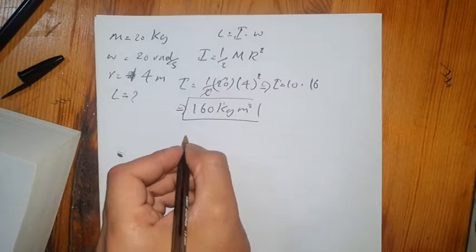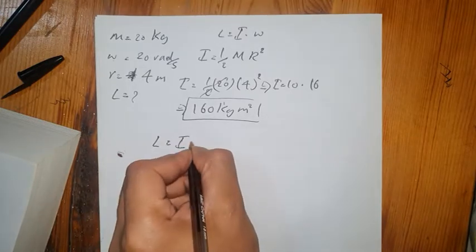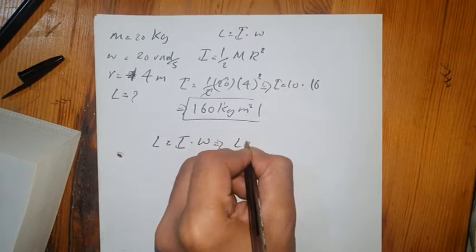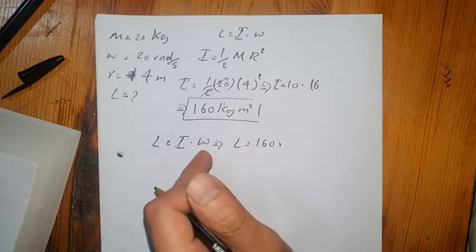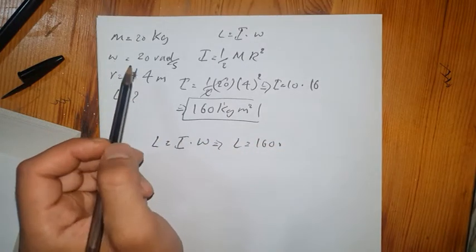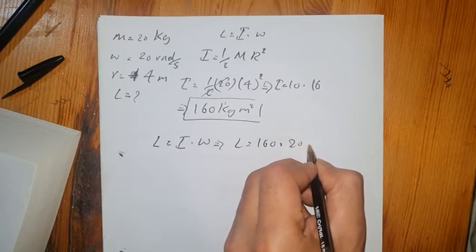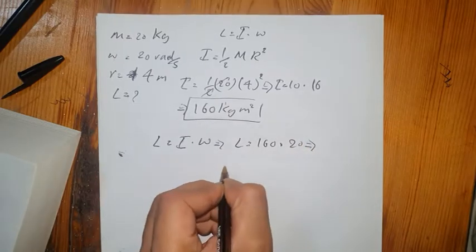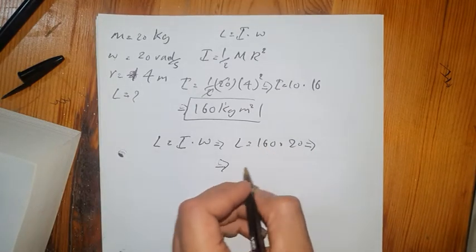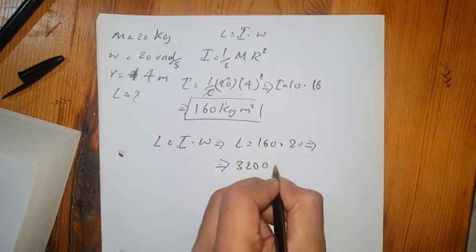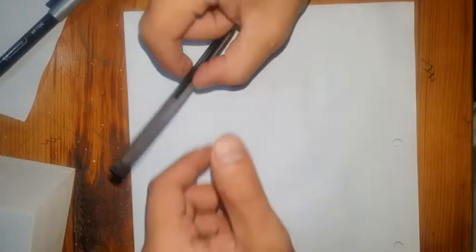Now we put that into the first formula: angular momentum equals I times omega. Our I is 160, and our object is spinning at a speed of 20 radians per second. So it's 160 times 20, which equals 3200. This is our angular momentum for this example.